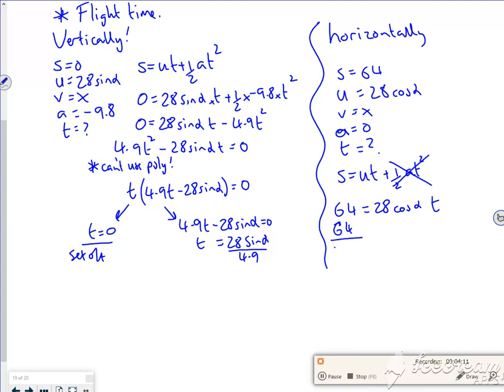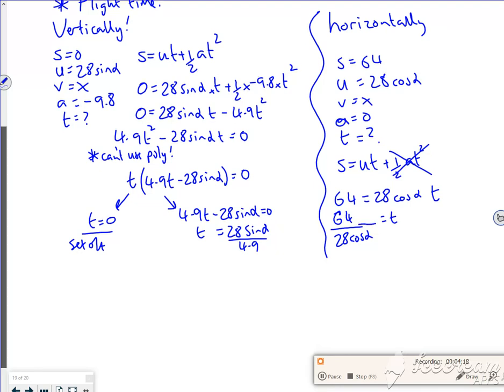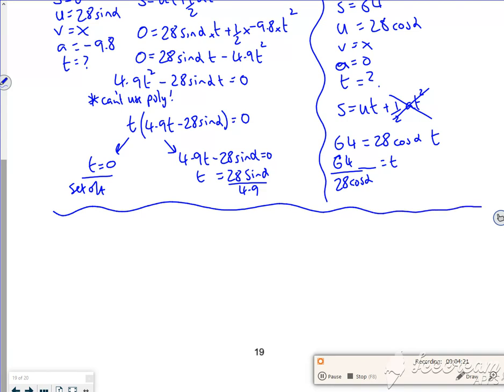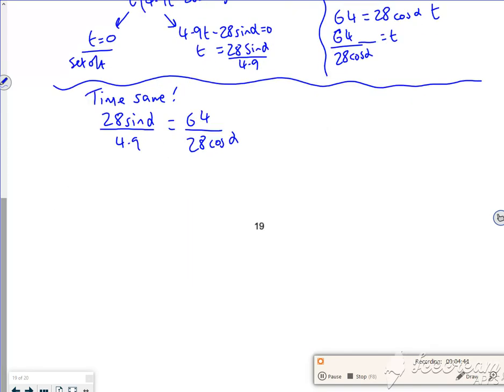So 64 over 28 cos alpha equals t. But the times are the same, aren't they? This is a little bit sneaky—I'm finding the times in terms of different variables, but the time is the same. So my 28 sin alpha over 4.9 equals 64 over 28 cos alpha. My 28s will cancel... oops no they won't, so 28 squared up there. I'm going to take the cos up there squared, so all that's going to go up there.